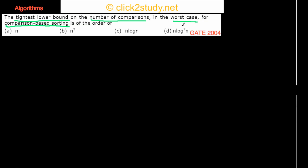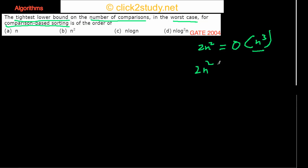We are finding the complexity for the worst case, but we need the tightest lower bound. For example, 2n² is in O(n³) — that is an upper bound but it is not tight. The tighter bound would be to write that 2n² is in O(n²), which is what 'tight' means.